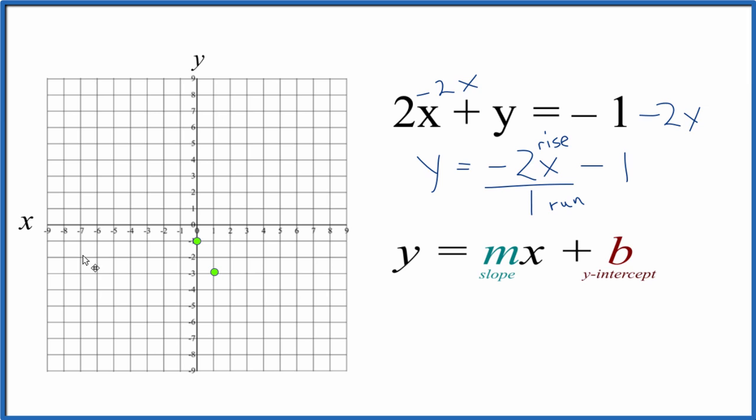Let's do another point. We go to our new point and rise negative 2, then go over 1. You can see the points all line up.